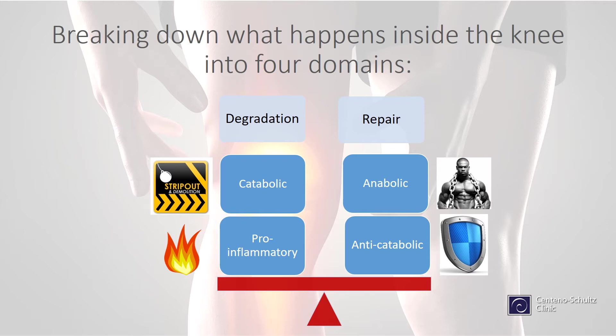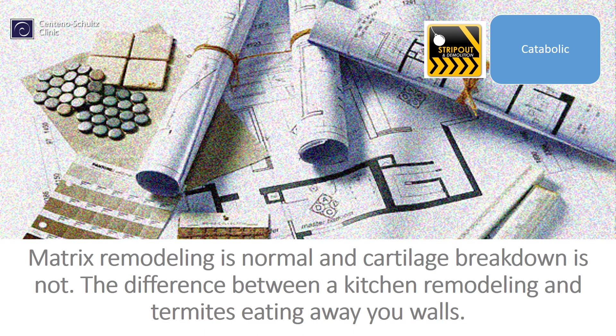On the repair side, we have anabolism — growth factors that will help build new things. We also have anti-breakdown, what we call anti-catabolic, meaning chemicals within the knee that will prevent things from breaking down. When we're talking about demolition within the knee, demolition is a key part of building. If you're going to remodel your kitchen,